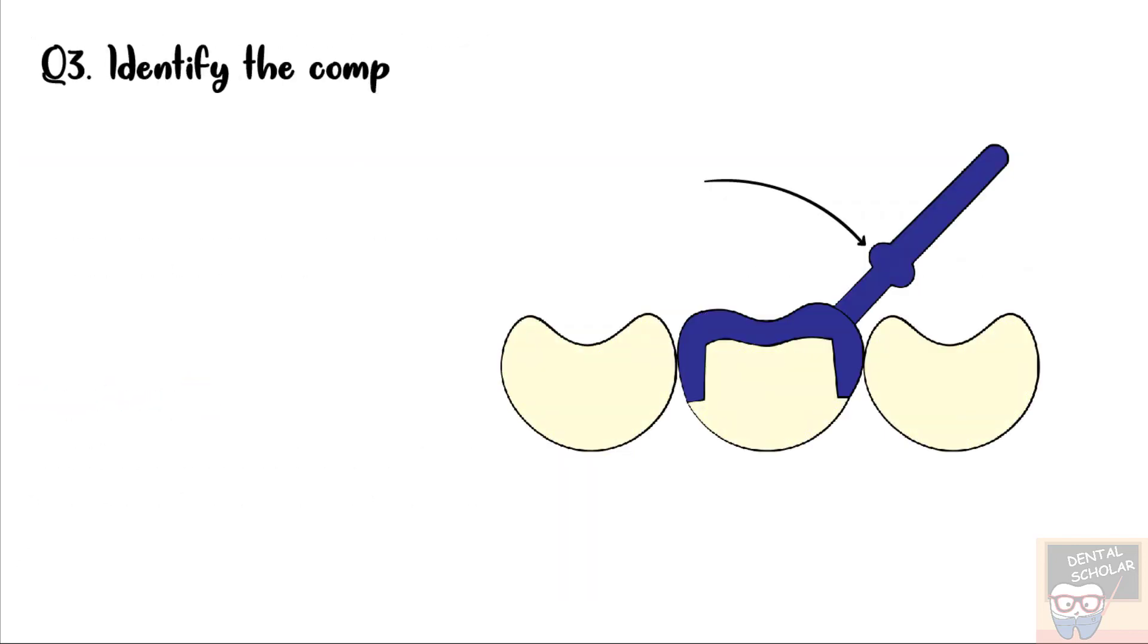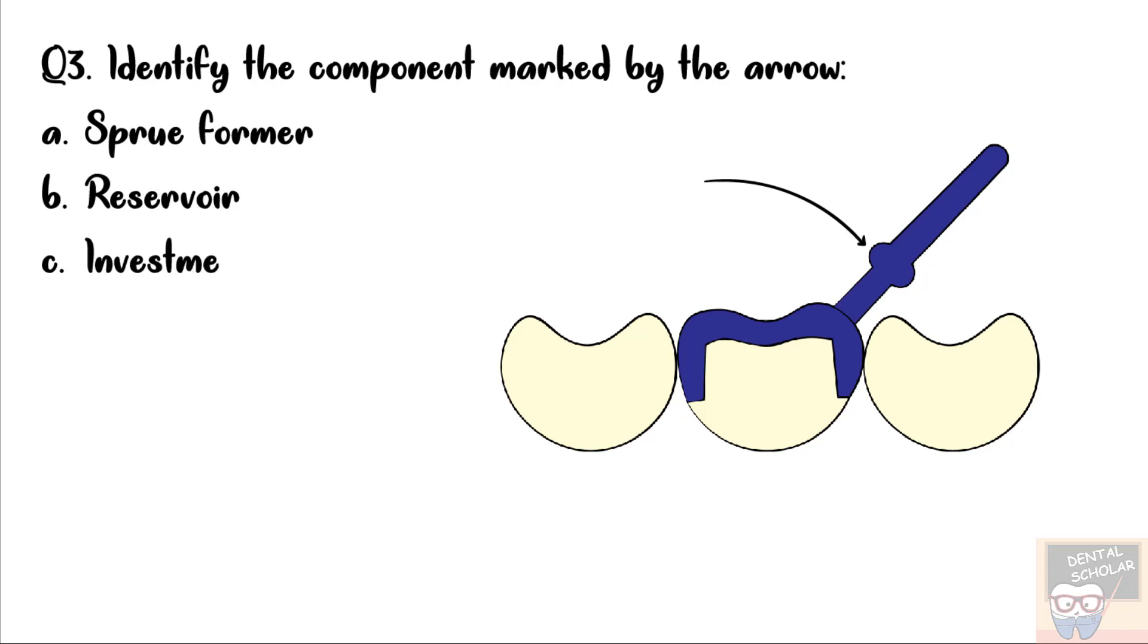Let's now go to question number 3. Identify the component marked by the arrow. Option A, sprue former, reservoir, investment, and crown. The correct answer here is option B, that is reservoir.